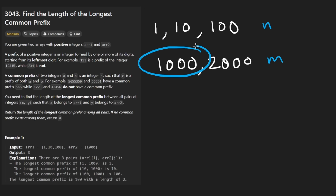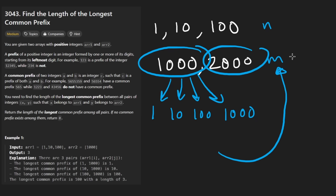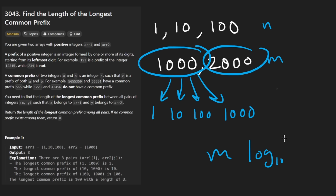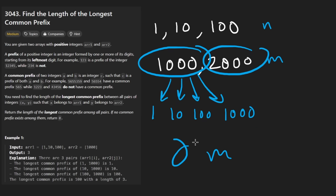The solution is to take each number and split it into all of its prefixes. For example, the number 1000 has prefixes: 1, 10, 100, and 1000. Throw all of those into a hash set for every number in the array. The hash set size will be proportional to the length of the array times log base 10 of the maximum number, but this is effectively constant, so space is O(m).